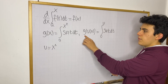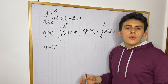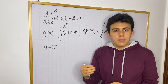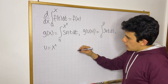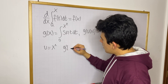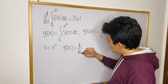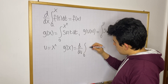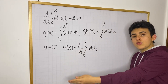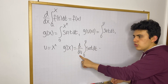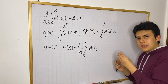If we want to find the derivative of g, which is a function of a function, we use the chain rule just as in Calculus 1: take the derivative of the outside function and multiply by the derivative of the inner function. So g'(x) equals d/du of the integral from 0 to u of sine(t) dt, times du/dx.